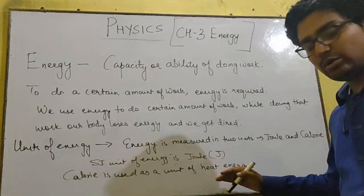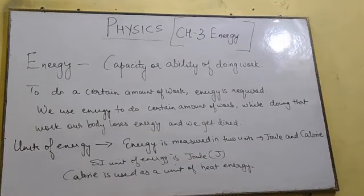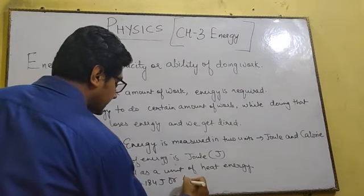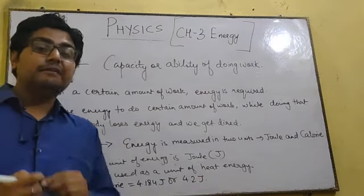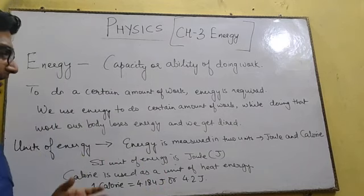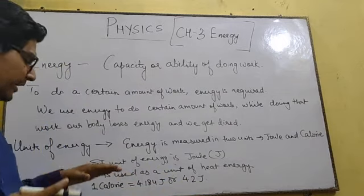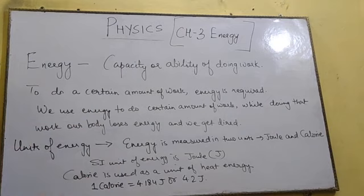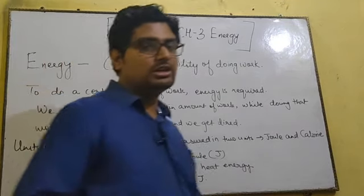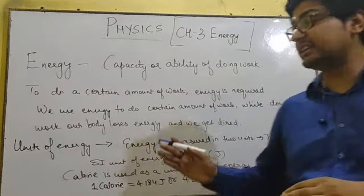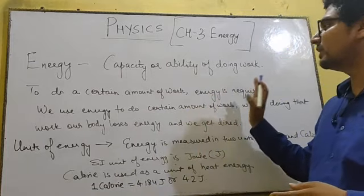The relationship between the two units: 1 calorie is equal to 4.184 Joules, or approximately 4.2 Joules. Each calorie consists of 4.184 Joules of energy. In higher classes we sometimes use 4.2 Joules, but the more accurate value is 4.184 Joules. Calories is used in terms of heat energy. Learn these formulas as we will proceed with more topics related to energy and types of energy.